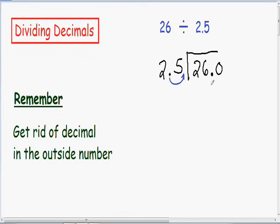So now we have a decimal in the inside number. And since we moved our outside decimal one unit to the right, now we can move our inside decimal also one unit to the right. So after we move our decimal one unit to the right, our 2.5 becomes 25. And after we move our decimal one unit to the right, our 26.0 becomes 260. So 26.0 divided by 2.5 is exactly the same as 260 divided by 25.